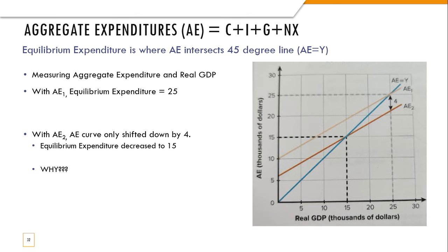If we shift this curve down, let's say we spend four thousand dollars less, what's going to happen? In this case, we have a new equilibrium expenditure which is right here at fifteen thousand dollars. So we spent four thousand dollars less, but we have a new equilibrium expenditure which is 25 minus fifteen thousand less, and that is because of something called the multiplier. We'll talk about why that is in another video.